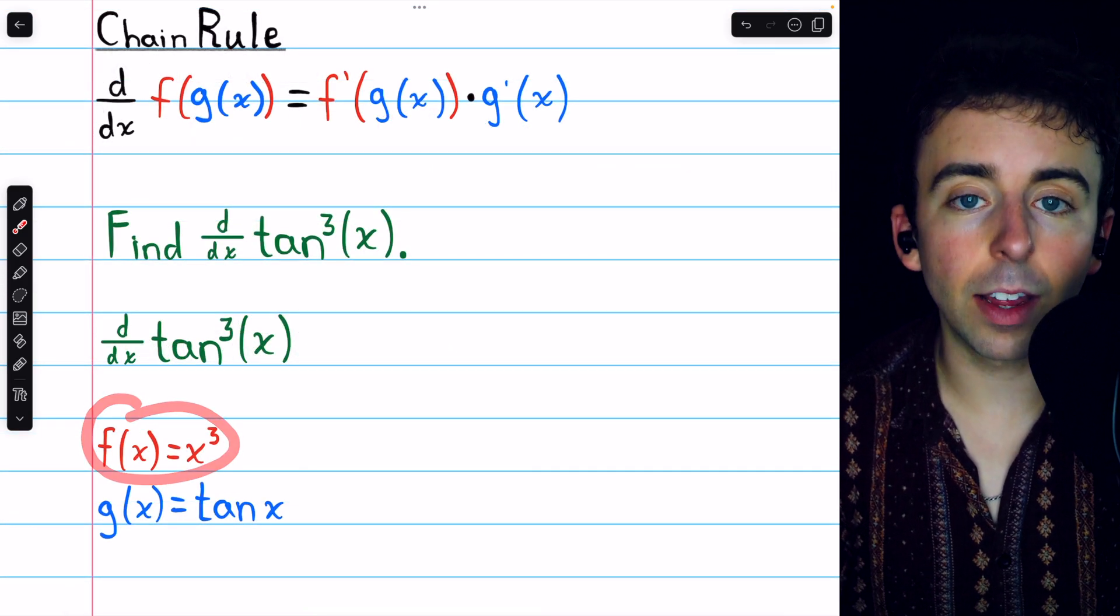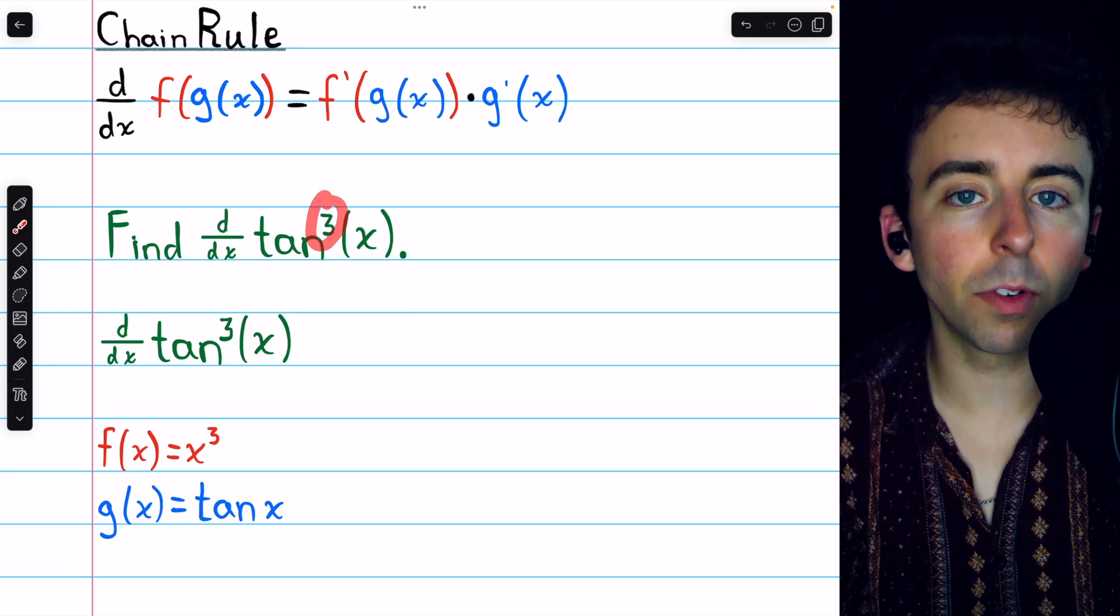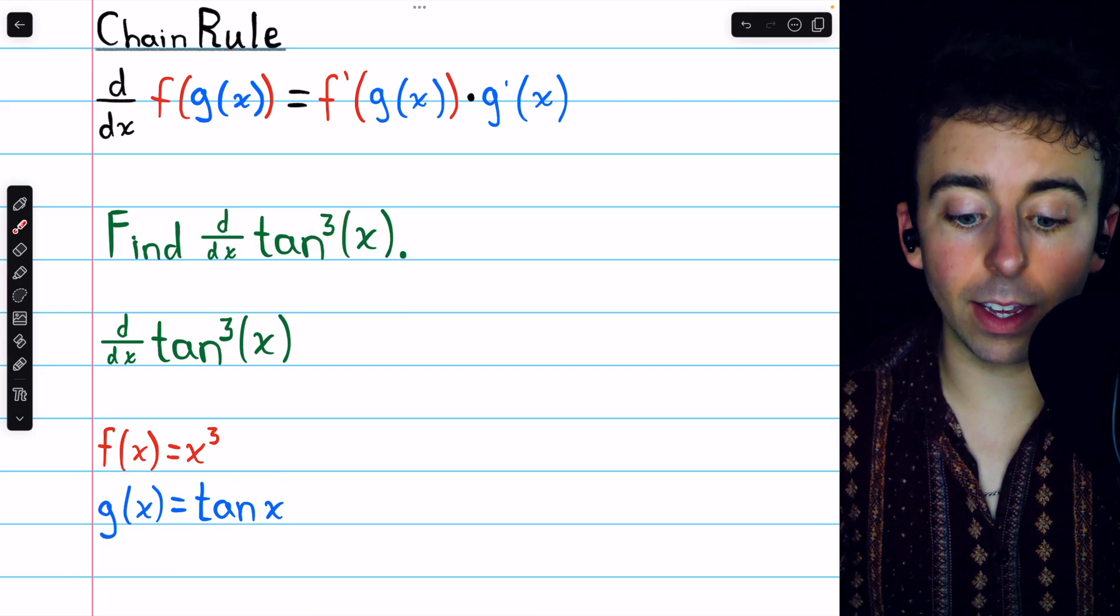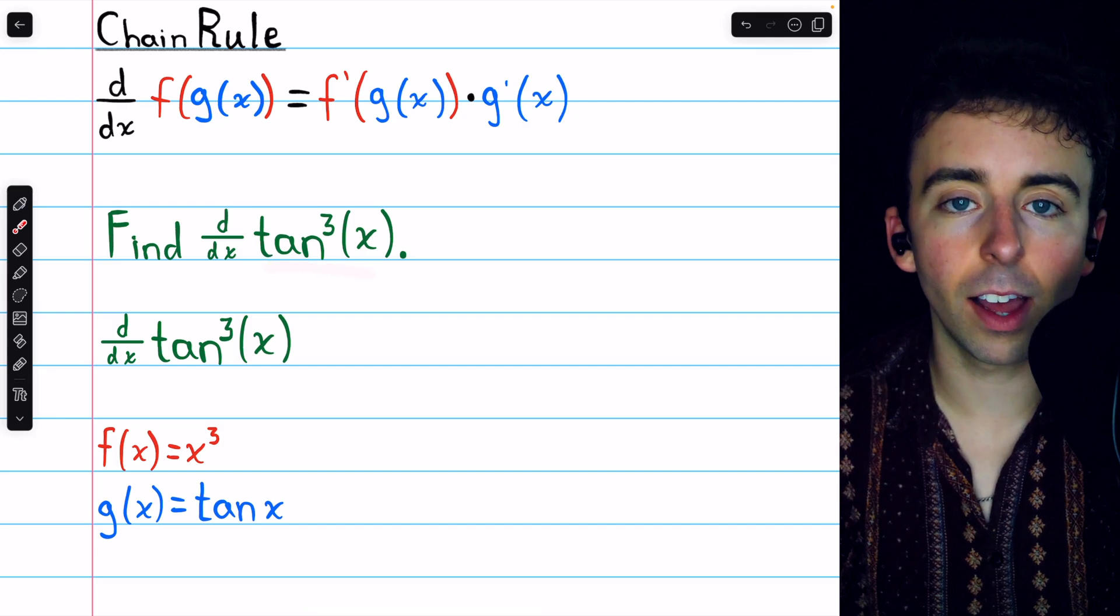In this case, f, our outside function, is the cubing function, and our g, the inside function, is the thing being cubed, which is tangent of x.